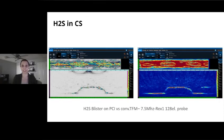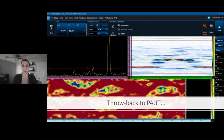So this is H2S in carbon steel. This is something that TFM was a good application for. We can see that we have very good results still with the TFM, but we can see just a little bit more when using the PCI.